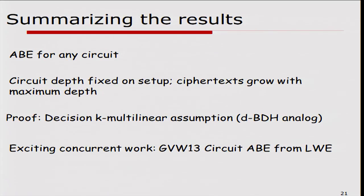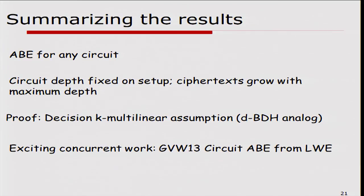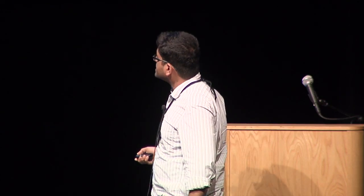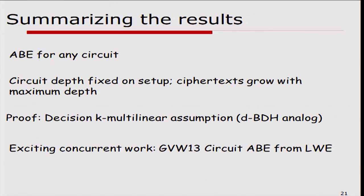Summarizing the result: we get attribute-based encryption for any circuit. The circuit depth is fixed at setup time, and the ciphertext size grows with the maximum depth that is fixed. The proof relies on the K-multilinear assumption, which is a natural analog of the decisional bilinear Diffie-Hellman assumption. There's an exciting concurrent work by Gorbunov, Vaikuntanathan, and Wee. The really nice feature of their work is that they don't rely on multilinear maps — they rely on learning with errors, which is a more well-studied assumption. Thank you.